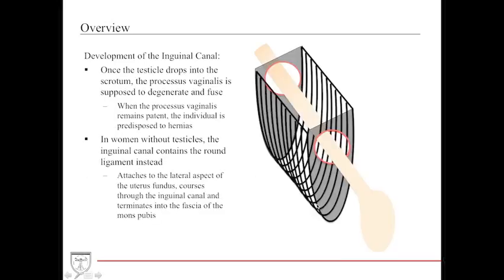Once the testicle drops into the scrotum, the processus vaginalis is supposed to close and obliterate. When the processus vaginalis fails to do so and remains patent, the individual will be predisposed to hernias.